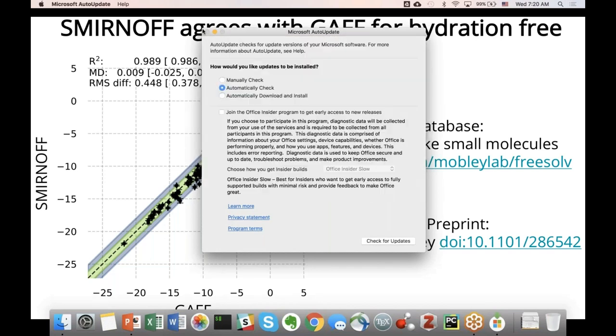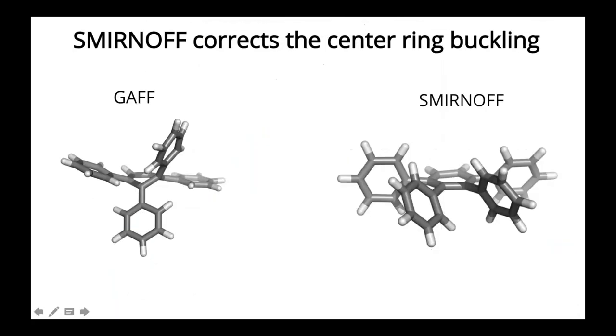I thought I had turned all those things off. Okay, so then going back to that concrete example I showed you with GAFF, with the internal ring buckling, doing a single molecule minimization with SMIRNOFF gives us the center ring in the position it's supposed to be in, where the middle aromatic ring is indeed flat. So just further promise that by decoupling these different parameters, we can in fact get better behavior on the conformation side.